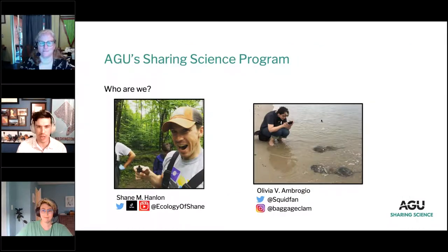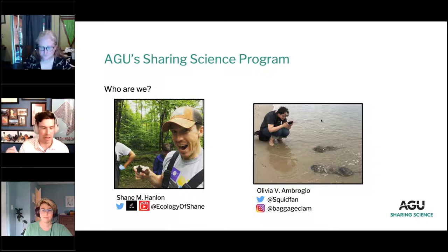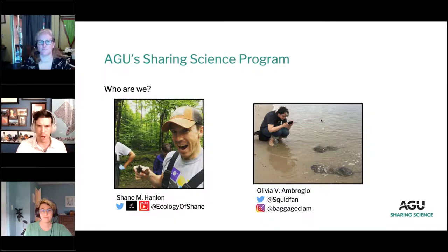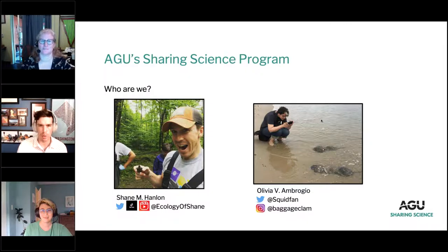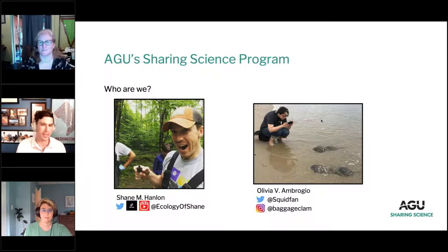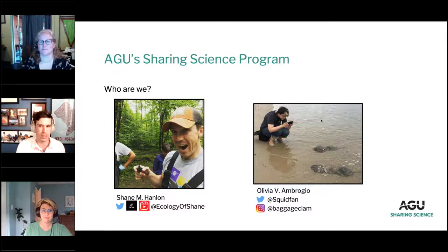My name is Shane Hanlon, and I'm one of the two core employees in the AGU Sharing Science program. I'm a research scientist by training — I have a PhD in conservation ecology and used to study amphibians and reptiles as a herpetologist. I came to this world by doing essentially a policy postdoc in Washington, D.C. I loved that work but wanted to do more communication-type stuff, and I ended up at AGU where I get to dabble in research, communication, and policy.